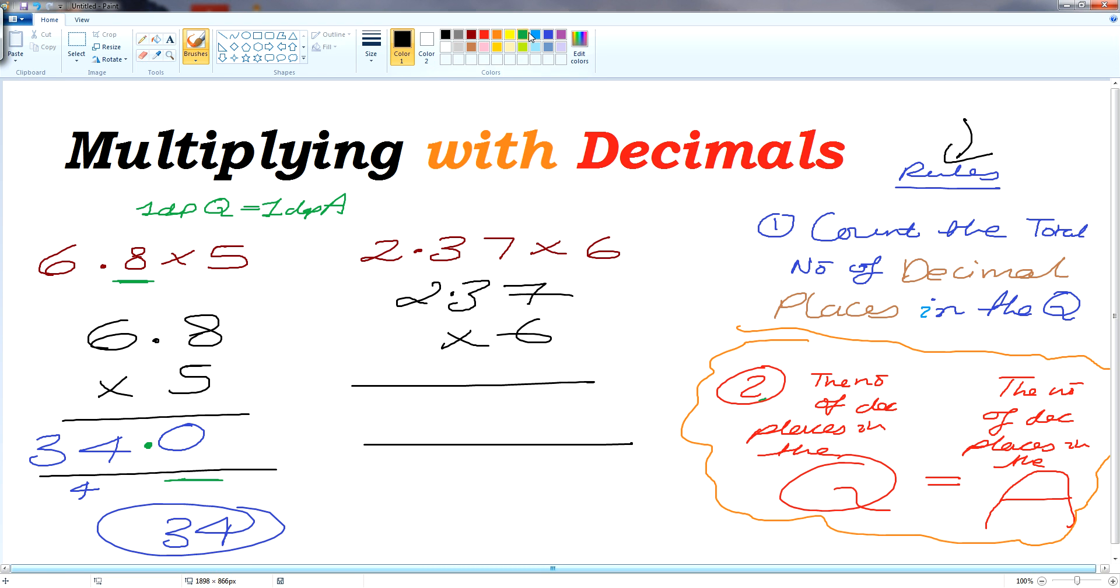Now what we need to do, we need to count the number of decimal places. So it's 1, 2. We have 2 decimal places in the question.